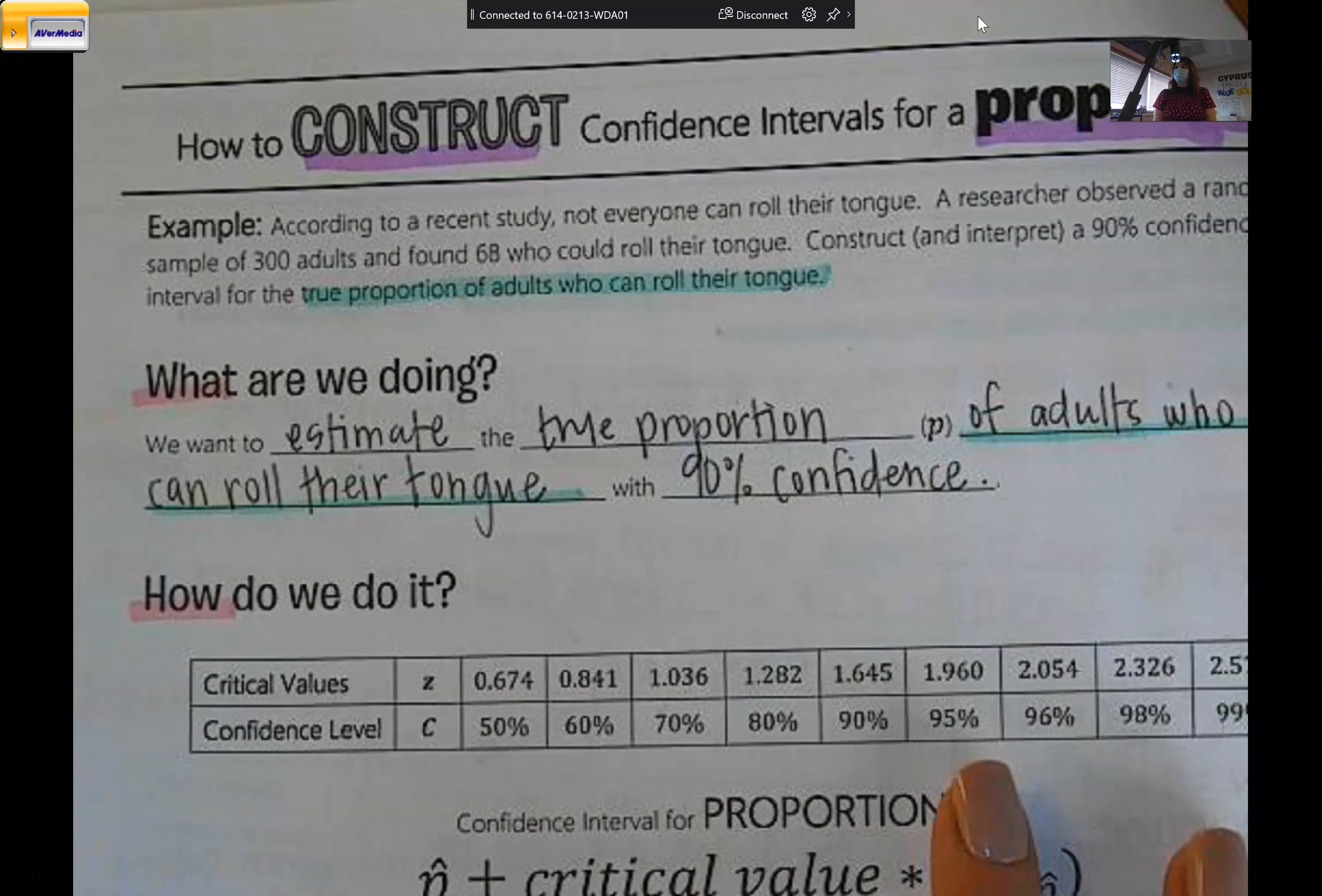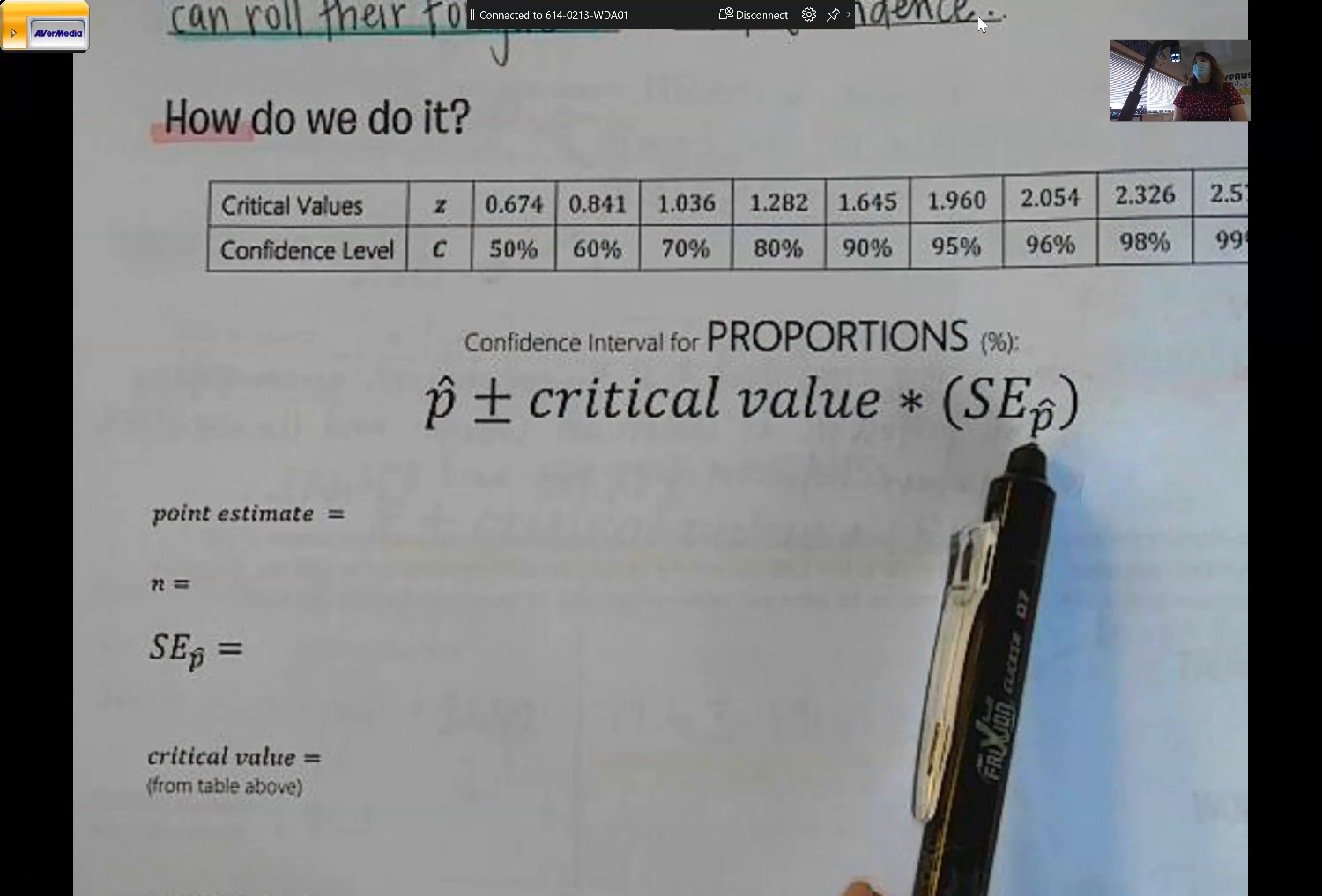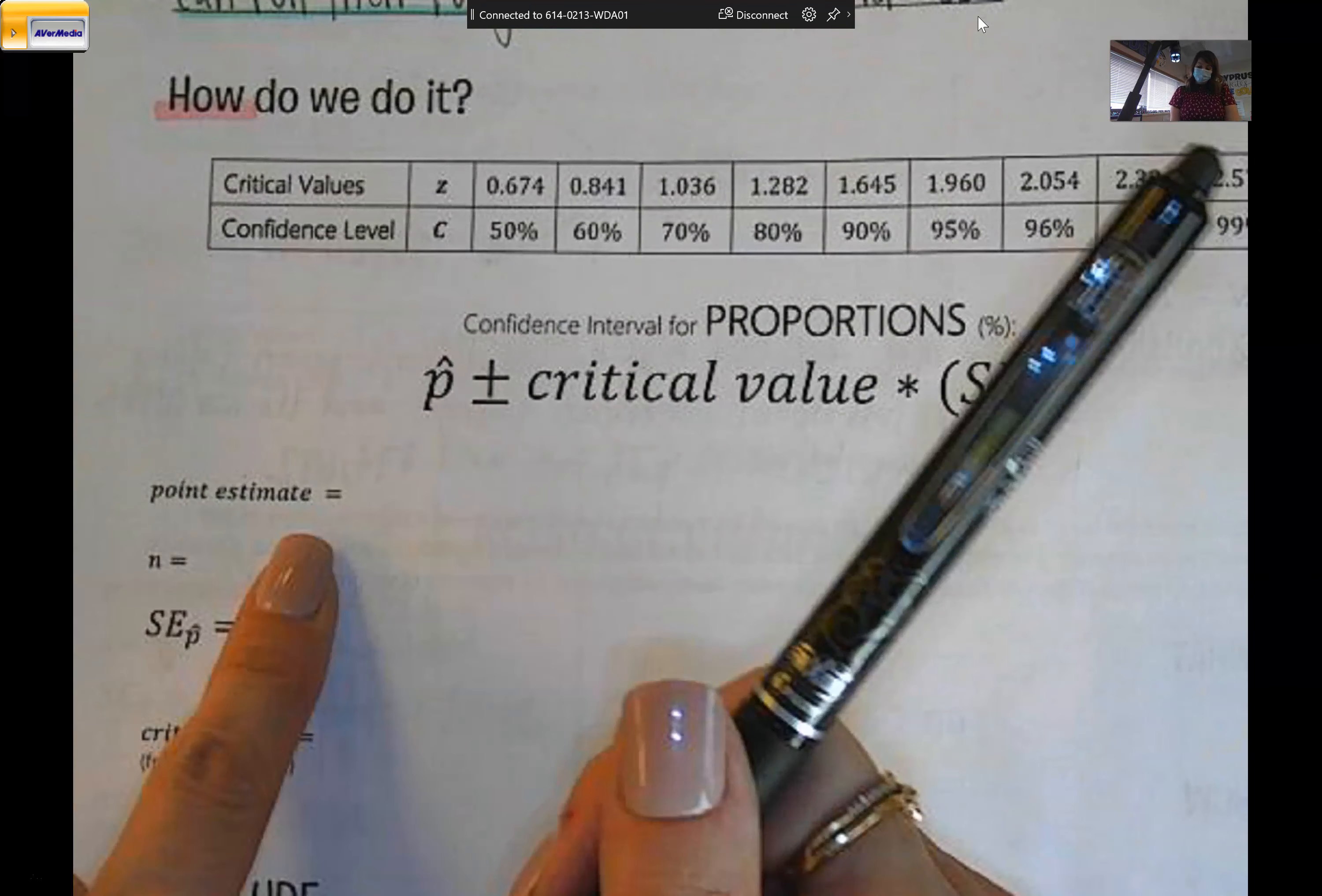This confidence table, confidence level and critical values is exactly the same as before. And this formula is the same. We're just switching out x̄ for p̂. So in this case, our point estimate is p̂ equals, well, we took a sample of 300 adults. So that's going to be my bottom, and I'm going to fill that in for n while I'm at it.